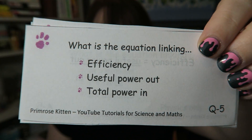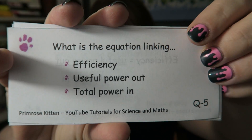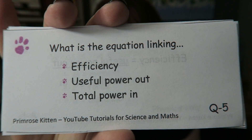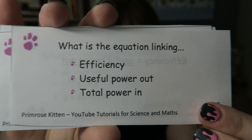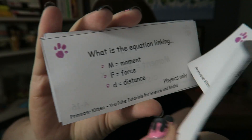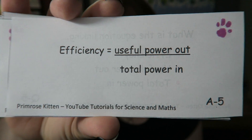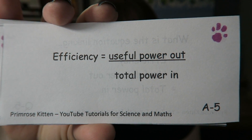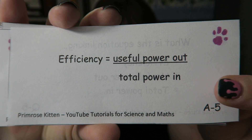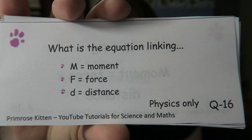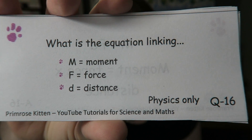What is the equation linking efficiency, useful power out, and total power in? Efficiency equals useful power out over total power in. This one's physics only.